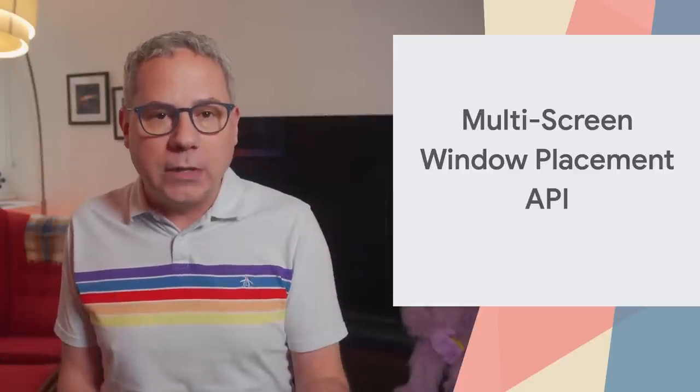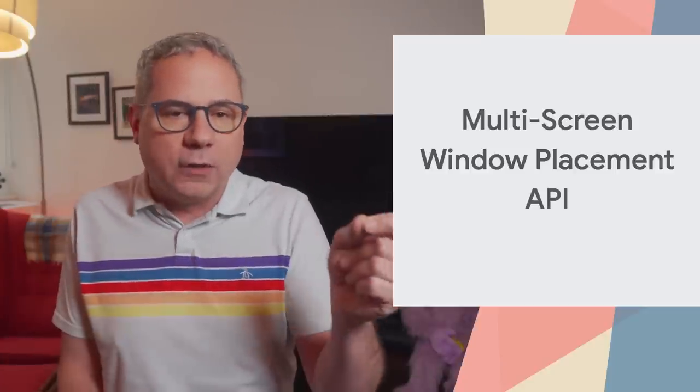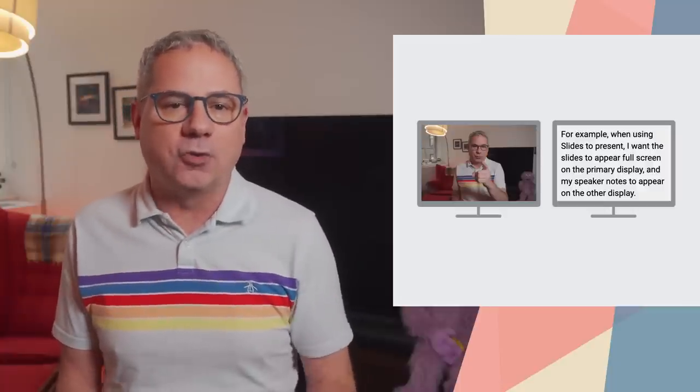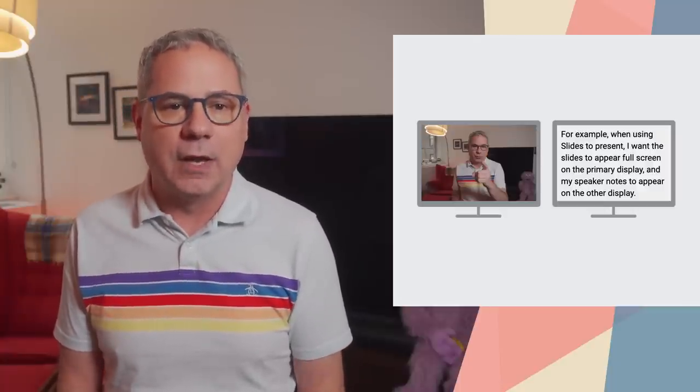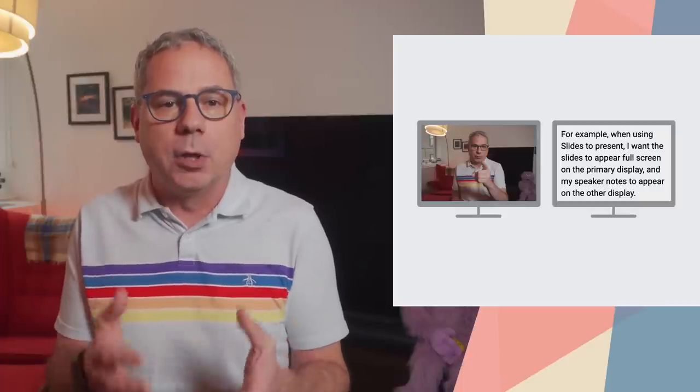For some apps, opening new windows and putting those windows on specific screens or in specific places is an important feature. For example, when using slides to present, you want the slides to appear full screen on the primary display and your speaker notes to appear on the other display. The multi-screen window placement API makes it possible to enumerate the displays connected to a user's machine and place windows on specific screens. It's graduated its origin trial and is now available in Chrome.